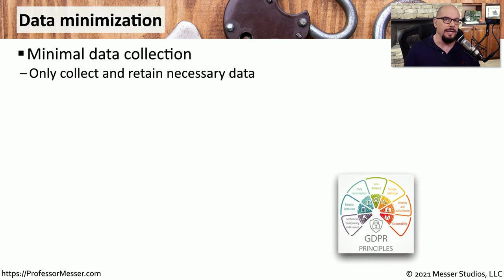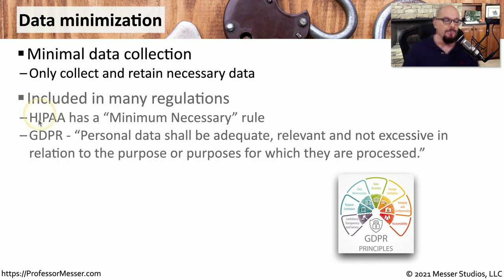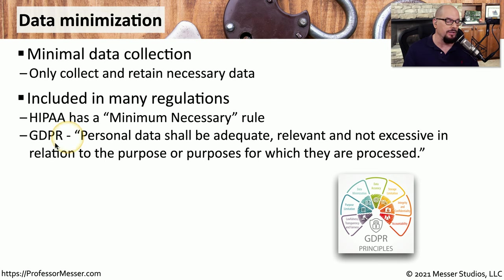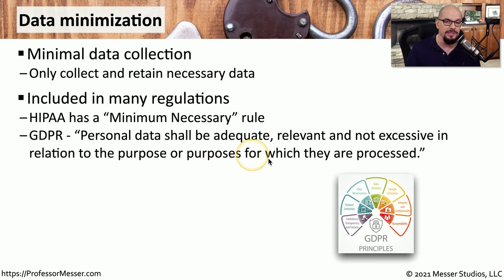Another way to enhance privacy is through data minimization. This means we would only collect data that would be used to perform the needed function. If you look at HIPAA regulations, you'll see that it has a minimum necessary rule. And in the European Union with GDPR, personal data shall be adequate, relevant, and not excessive in relation to the purpose or purposes for which they are processed — which in plain terms means we're only going to collect the information that's needed.